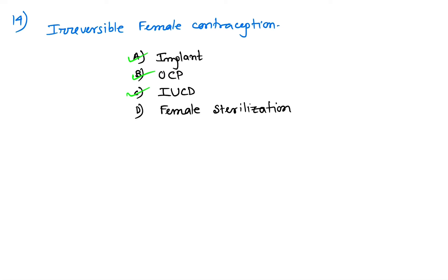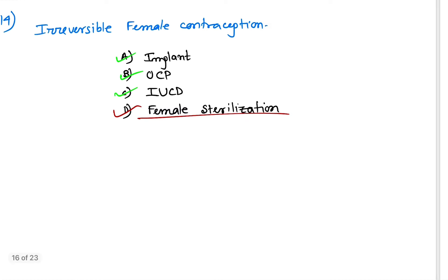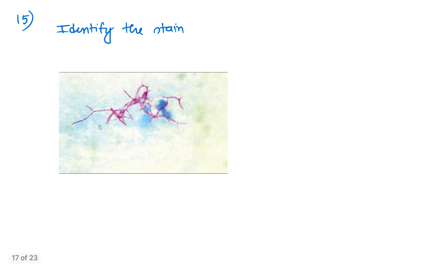The irreversible method is female sterilization. Question number 15: identify the stain. You can easily identify the organism from the staining. This is Nocardia.